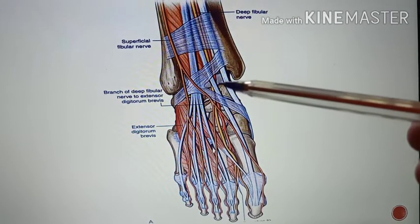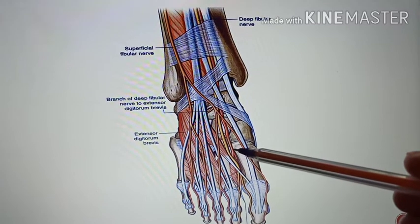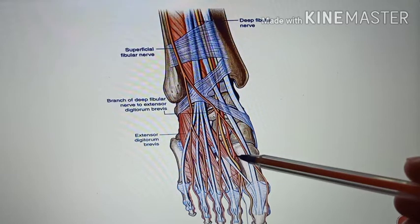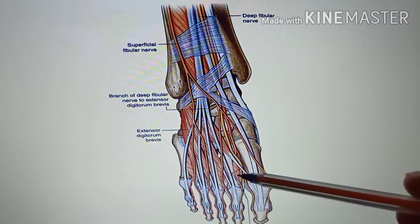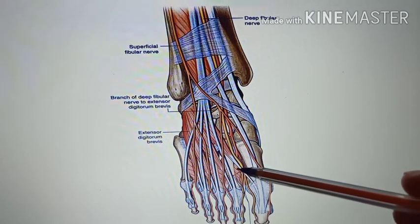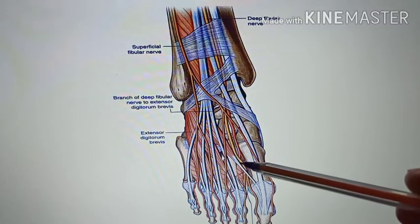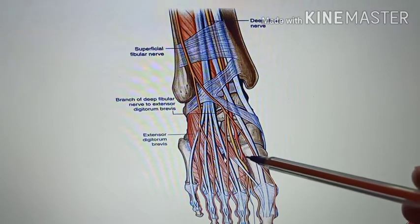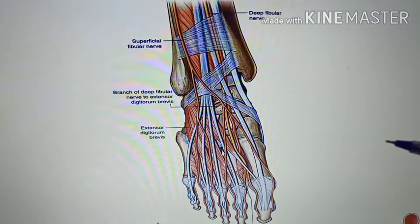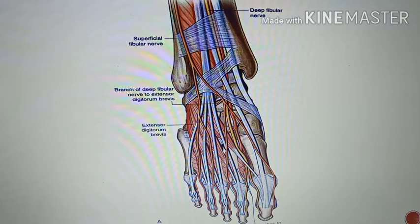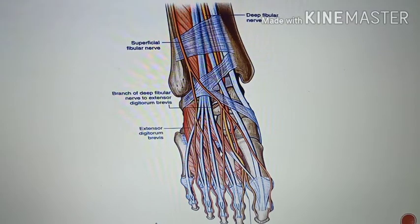In this picture you can see the dorsalis pedis artery entering the proximal end of the first intermetatarsal space, then dipping between the two heads of the first dorsal interosseous muscle to enter the sole of the foot. It ends by anastomosing with the lateral plantar artery to complete the plantar arterial arch.